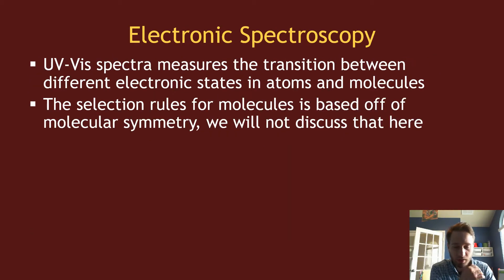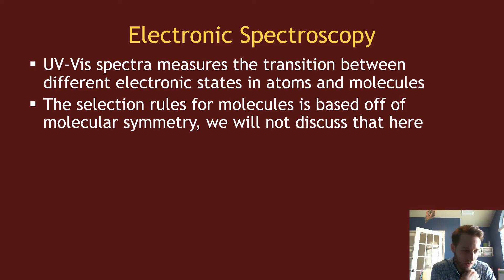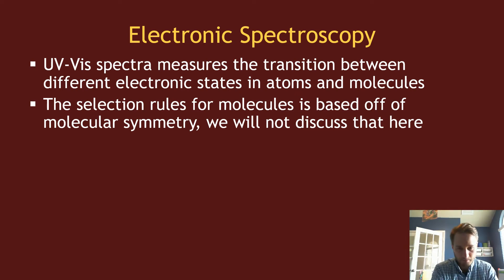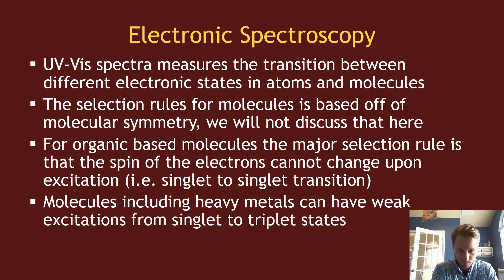Electronic spectroscopy, often referred to as UV-vis spectra, gives you the measurement of energy levels or the difference between energy levels in electronic states. There are a lot more details in terms of what transitions are allowed. You can work out the term symbols for molecular systems, and it has to do with a lot of these term symbols, symmetry, and things like that in terms of what are allowed and not allowed. We will not go into those here.